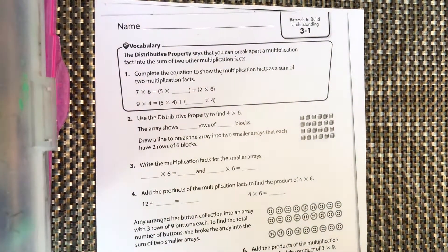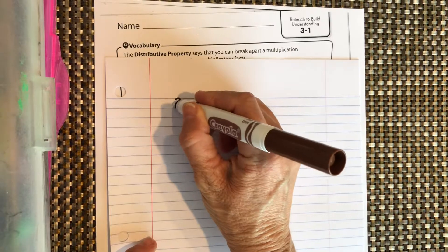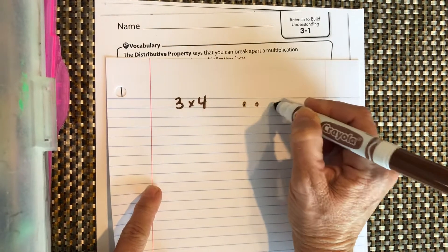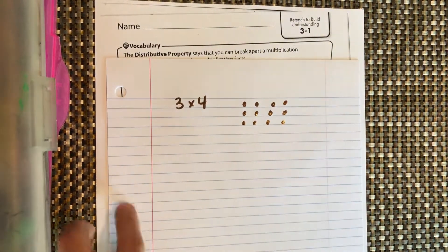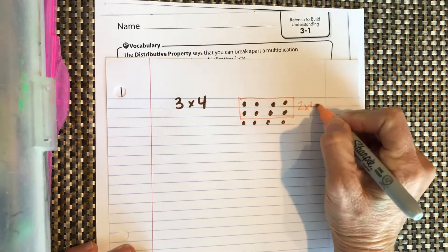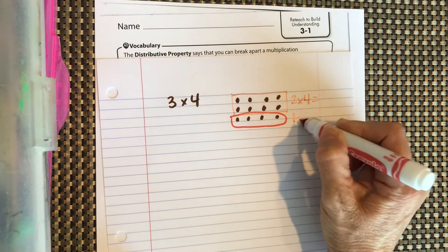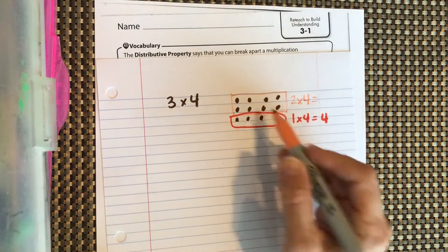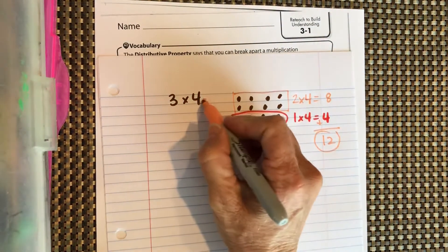What they're basically saying is we can take, let's say, 3 times 4. We can break this up — if we have 3 groups of 4, we can break it up into 2 times 4 and 1 times 4. One times 4 equals 4, two times 4 equals 8 — we can add them together: 8 plus 4 is 12.